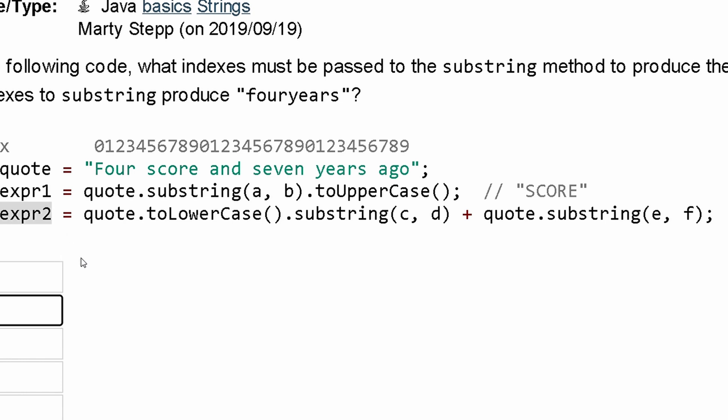fouryears. Four starts at zero, so we're printing out index zero. Next we have to find out where it ends. We have zero one two three four, so it ends at four. We don't include this index right here.